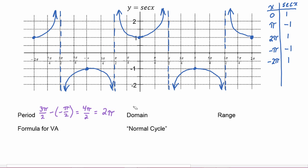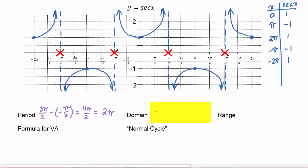When looking at the domain, we see there are definitely x values we have to exclude: negative three pi over two, negative pi over two, positive pi over two, positive three pi over two — there are going to be infinitely many places where we have to exclude x values. The distance between those x values is pi. So these are going to be integer values of pi away from each other. We know how to say that x cannot equal a starting value of pi over two plus n pi, where n stands for an integer.